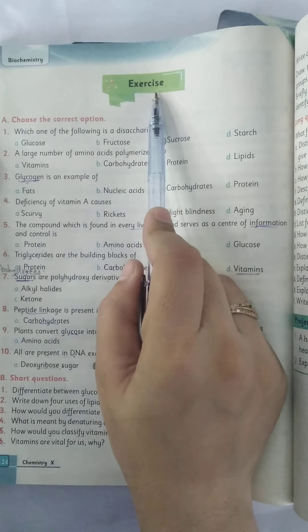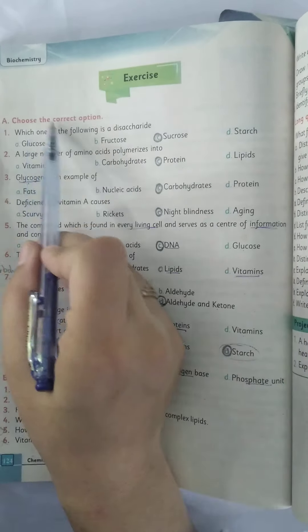In this video, we are going to discuss exercise. Choose the correct option: Which one of the following is a disaccharide? Glucose, fructose, sucrose, and starch. As you know, glucose and fructose are monosaccharides, sucrose is disaccharide while starch is polysaccharide. So the correct option is sucrose.